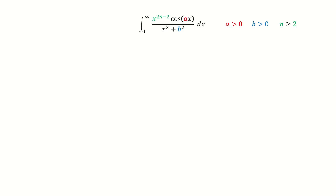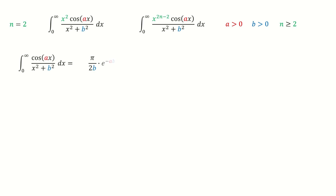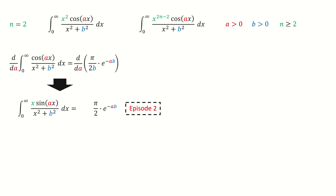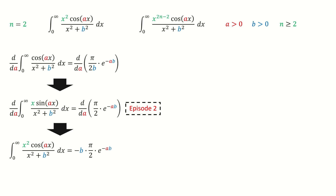Let's look at this integral. Here, n takes integers and is greater or equal to 2. First, we set n equals 2 and record the result we derived in episode 1. In the last video, which is episode 2, we did the derivative on both sides. After simplifying, we got this result — and the note for this green colored x is coming from the chain rule. So now, maybe you want to do another derivative. Then we got this answer for n equals 2.